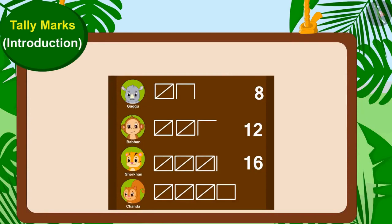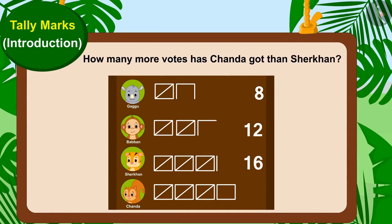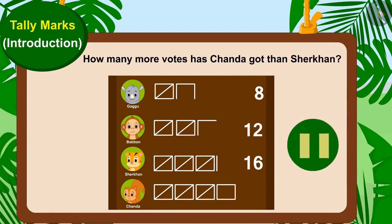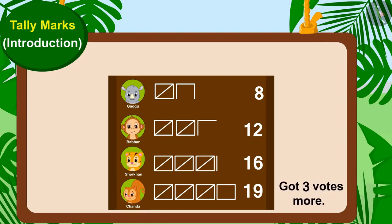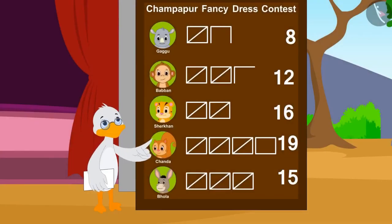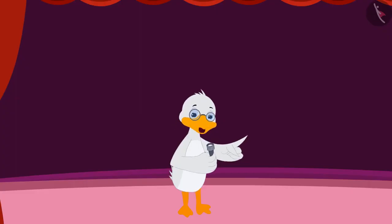Now, can you tell how many more votes Chanda got than Shere Khan? If you wish to, you may stop the video and find the answer. Chanda has received 19 votes and Shere Khan has got 16 votes. This means Chanda got three more votes than Shere Khan. Barbole uncle counted the votes and announced the winner of the contest.